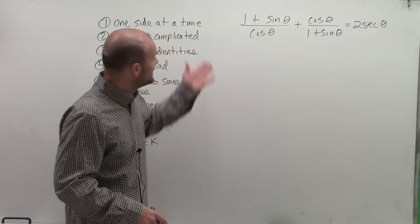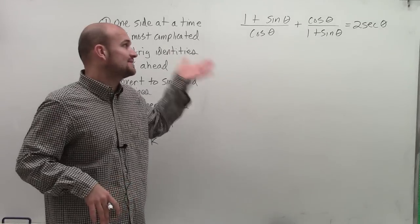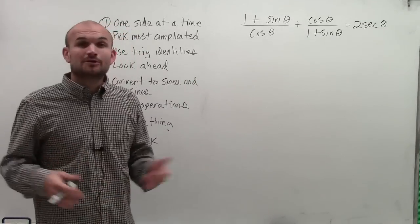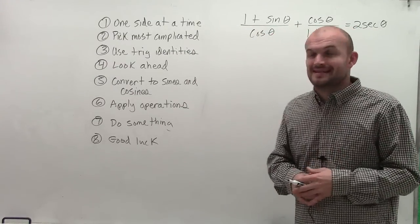Welcome. So what I have here is 1 plus sine of theta divided by cosine of theta plus cosine of theta divided by 1 plus sine of theta equals 2 secant of theta. And what we want to do is we want to verify that these two are the same.